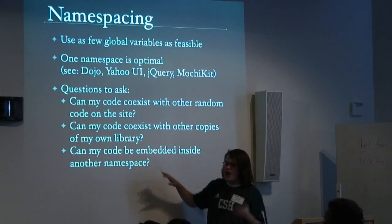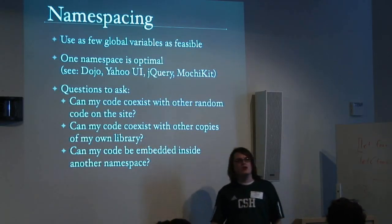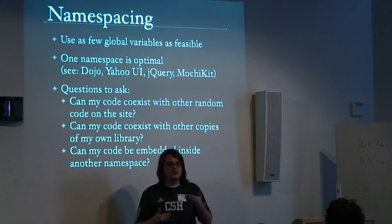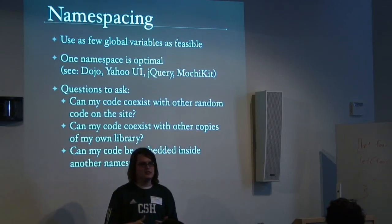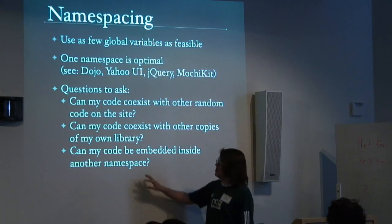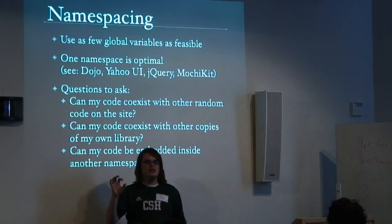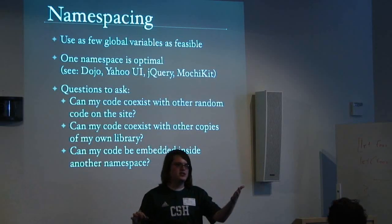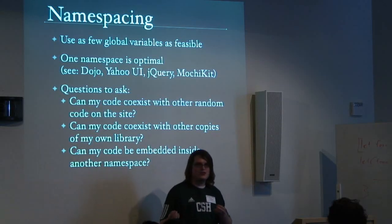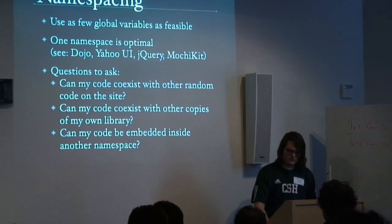Other interesting questions I'm starting to look at: Can my code coexist with other copies of my own library? If you include jQuery 1.1 and jQuery 1.2 together on the same page, will they overwrite each other's methods? That's a harder problem to tackle — it's definitely feasible and I want to get that into jQuery 1.2. Also: can my code be embedded inside another namespace? For example, could I take the jQuery namespace and copy it into Dojo's namespace, so I could do dojo.jQuery? No library can currently handle that — they depend on special contexts and naming being available. It's also a hard problem.